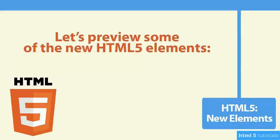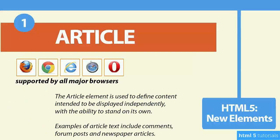Let's take a look at some of the new HTML5 tags or elements that are available. Some of them we'll be using in our blog project. The first tag is the article tag. It's supported by all the major browsers — Firefox, Chrome, Internet Explorer, Safari, and Opera. The article tag is used to define content specifically designed to stand on its own, such as a newspaper article or a forum post.